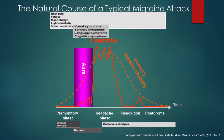Migraine is not just a headache — there are multiple phases in a migraine attack. The premonitory phase can start hours to days before the headache pain. During this phase, people tend to have increased yawning, increased urination, mood changes, appetite changes, and cravings. They can also have some neck pain or stiffness.